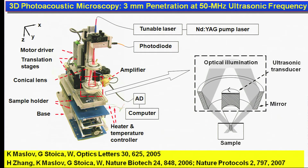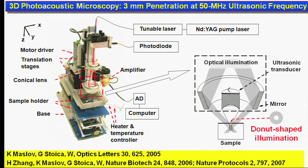For microscopic imaging, this first 3D photoacoustic microscopy system achieved tens of microns of resolution over 3 millimeters of penetration. The laser beam on the scan is donut-shaped to minimize surface interference. An ultrasonic transducer is aligned confocally with the optical focus to maximize SNR. A single laser shot yields a 1D image, and raster scanning produces a 3D image.